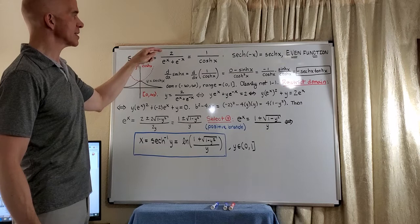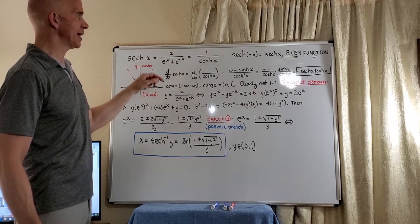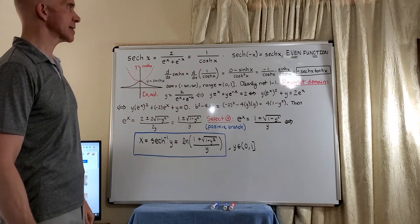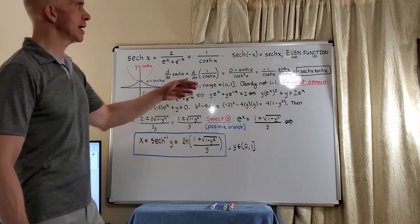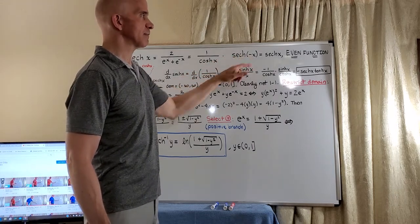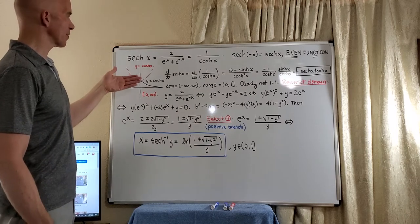So as we know before, its definition is just two divided by e to the x plus e to the negative x. Now, just like the hyperbolic cosine, the hyperbolic secant is an even function.